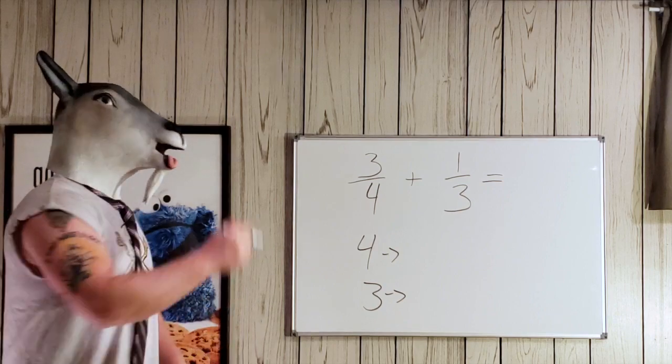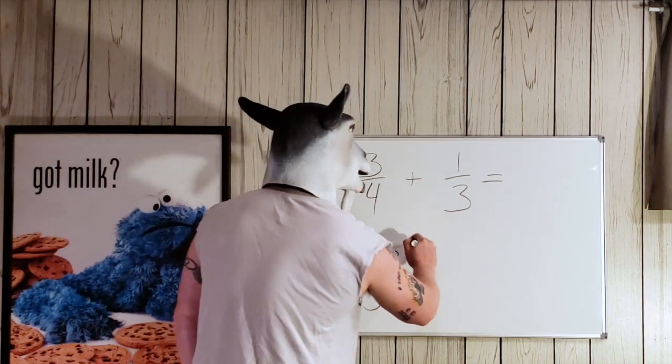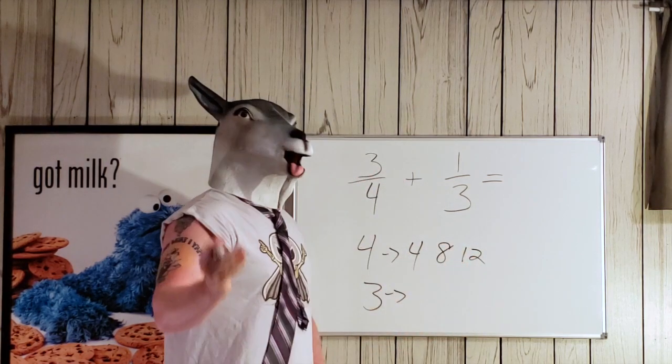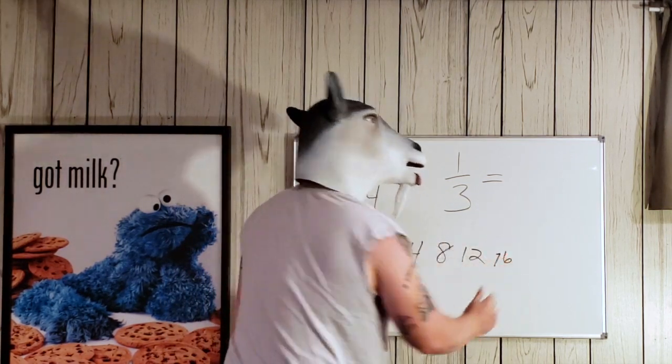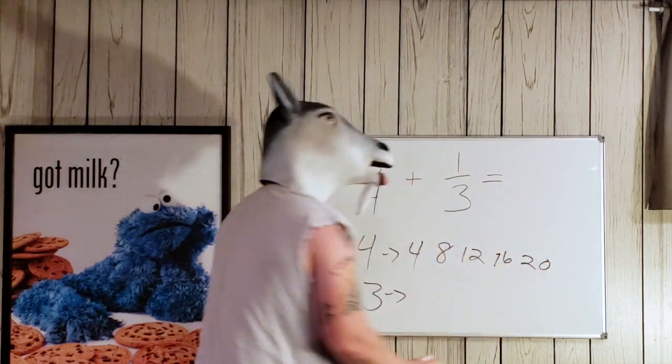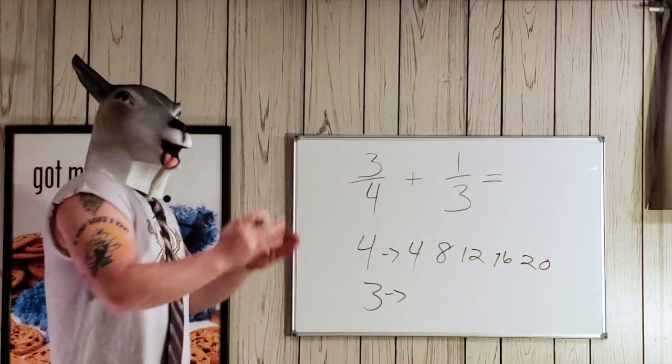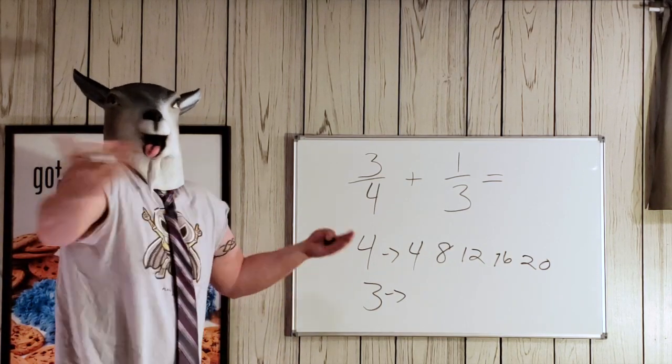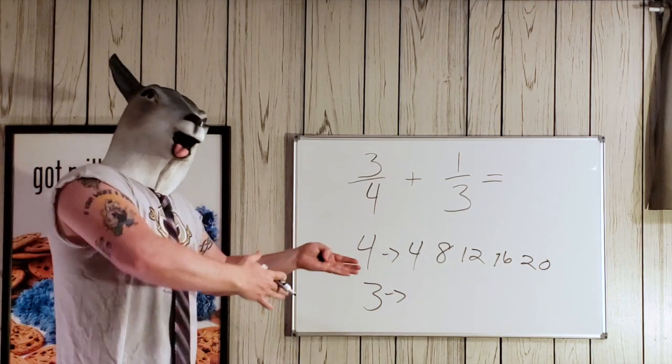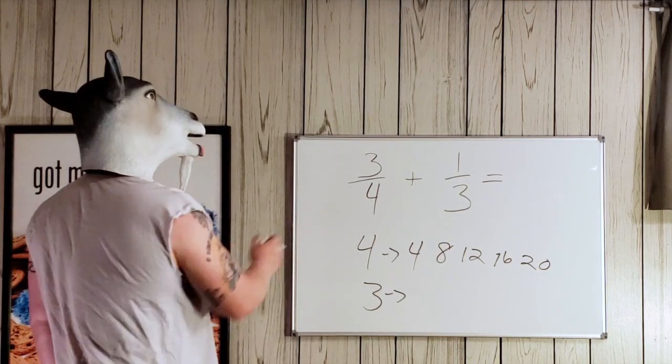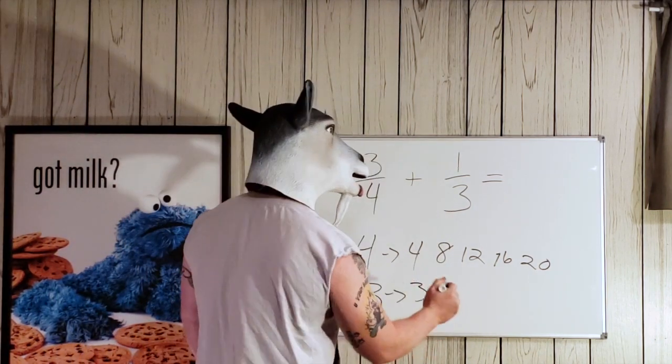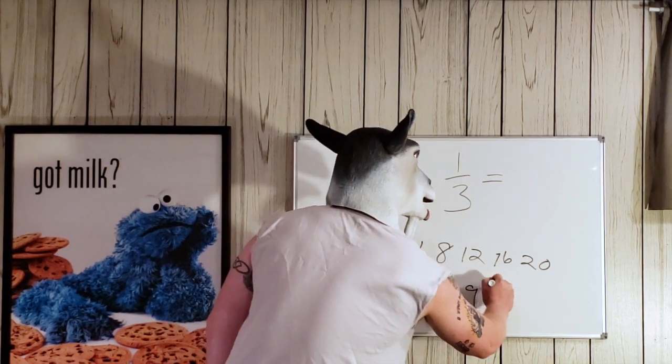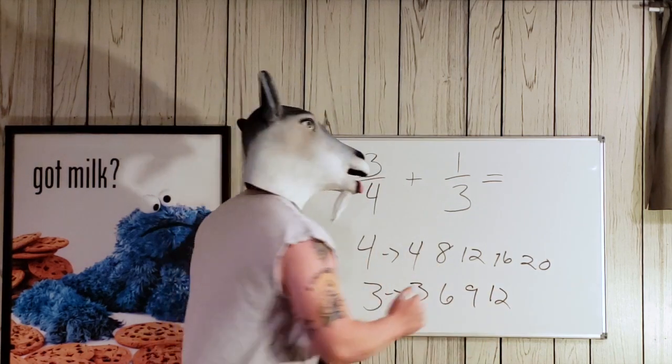So how do we do the multiples? We do 4 times 1 is 4, 4 times 2 is 8, 4 times 3 is 12, 4 times 4 is 16, 4 times 5 is 20. We're going to stop at the 5. If nothing matches it, we'll just keep going. Let's see if we get lucky. 3 times 1 is 3, 3 times 2 is 6, 3 times 3 is 9, 3 times 4 is 12, 3 times 5 is 15.